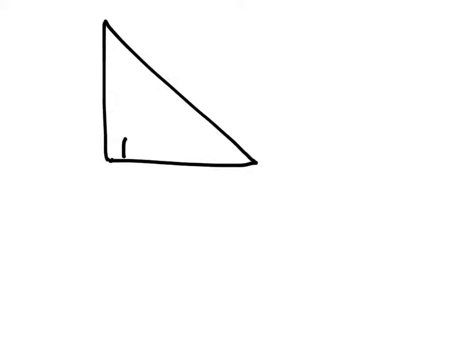Another way this is presented: they give you a right triangle and say one side length is 11 and another is 12 — find the length of the missing side. You need to determine: are we looking for a leg or the hypotenuse? The right angle is pointing to the hypotenuse, so x is one of the sides that makes up the right angle. As it turns out, we're looking for a leg.